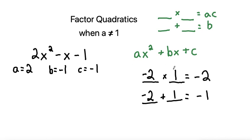Now once we found these two numbers, what do we do with them? We take these two numbers and we're breaking up our middle term into two terms with these coefficients.